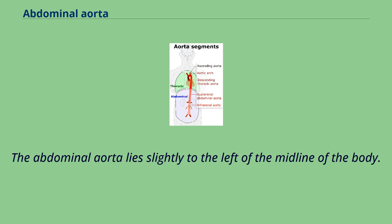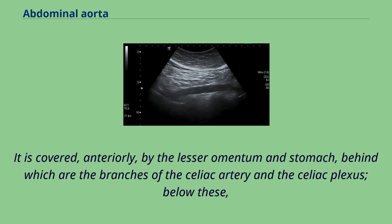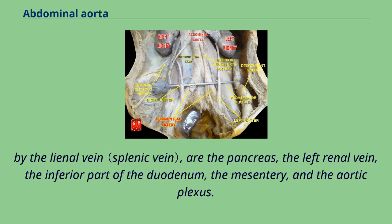The abdominal aorta lies slightly to the left of the midline of the body. It is covered anteriorly by the lesser omentum and stomach, behind which are the branches of the celiac artery and the celiac plexus. Below these, by the splenic vein, are the pancreas, the left renal vein, the inferior part of the duodenum, the mesentery, and the aortic plexus.